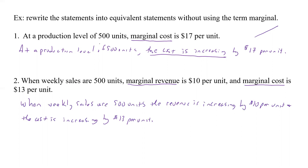For marginal cost, we think of it as looking at the tangent line, so it's increasing. Now if we had a negative slope — say negative $10 per unit — we'd say it was decreasing by $10 per unit instead. So you have to check the signs to see what's included.